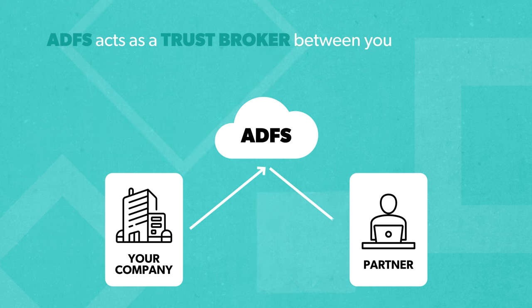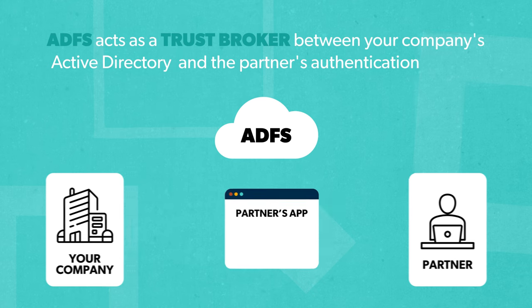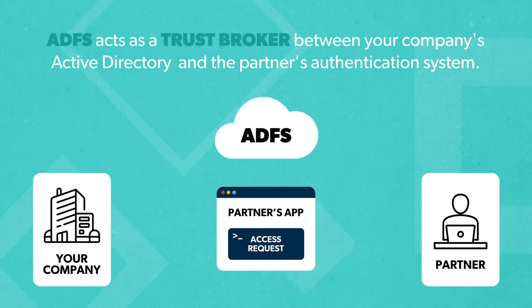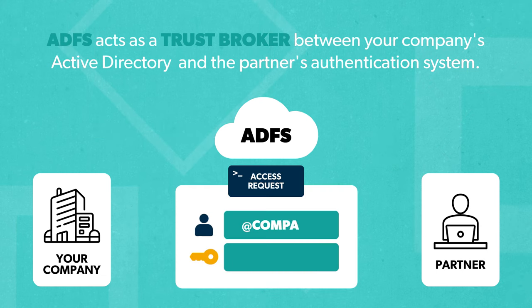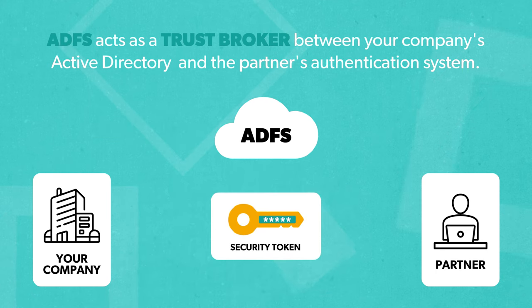ADFS acts as a trust broker between your company's Active Directory and the partner's authentication system. When you try to access the partner's application, ADFS intercepts the request and prompts you to enter your company's credentials. Once authenticated, ADFS generates a security token.